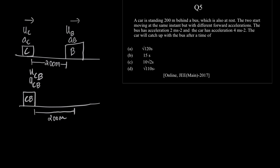In this case, the equation of motion can be written as, displacement time relation can be written as s equals ut plus half at square. What is s? The relative separation, which is 200, is equal to ucb into t plus half into acb into t square.